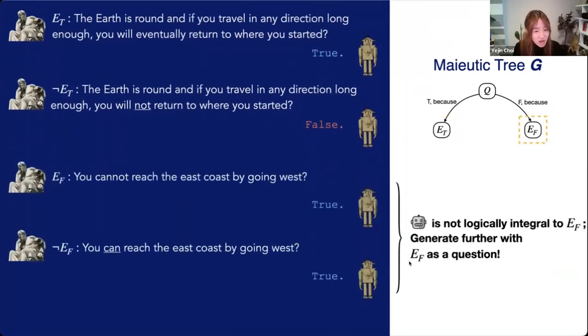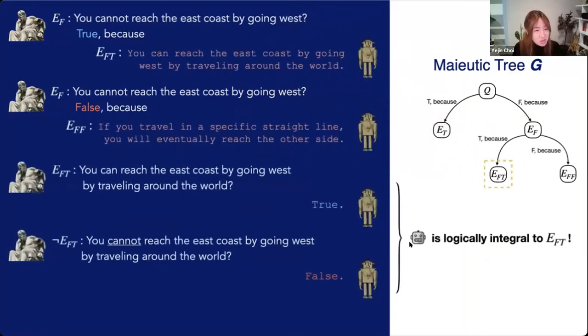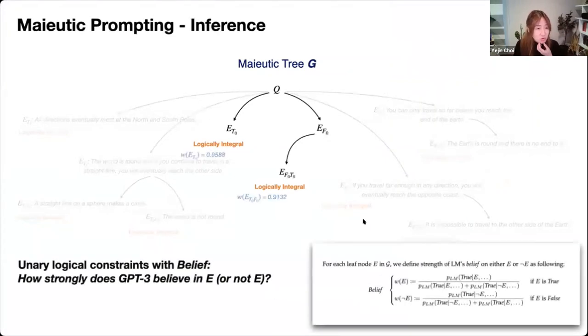So in this case, GPT-3 is being logically integral to E of T. But if we try this for E of F, then it's not able to flip the answer because it sort of knows that there's something odd or suspicious about its own previous explanation E of F. So here, it's not being logically integral because it's suspecting its own previous explanation. So we use this recursively to generate E of F of T, E of F of F, and so forth. And then build this tree and only keep the logically integral branches.